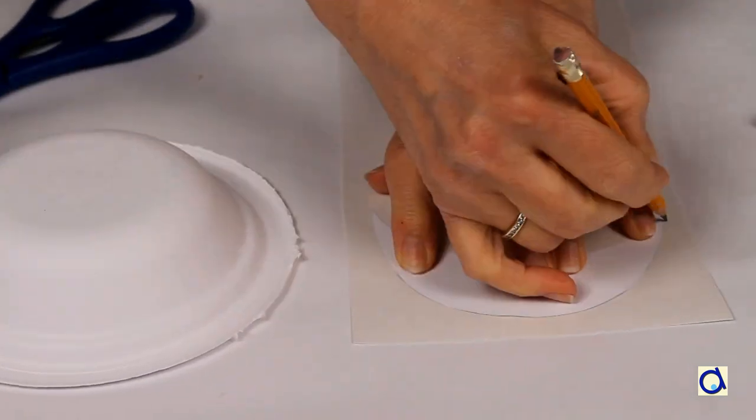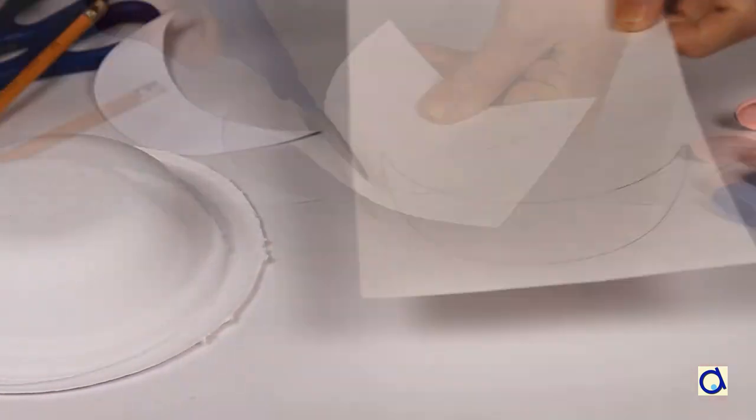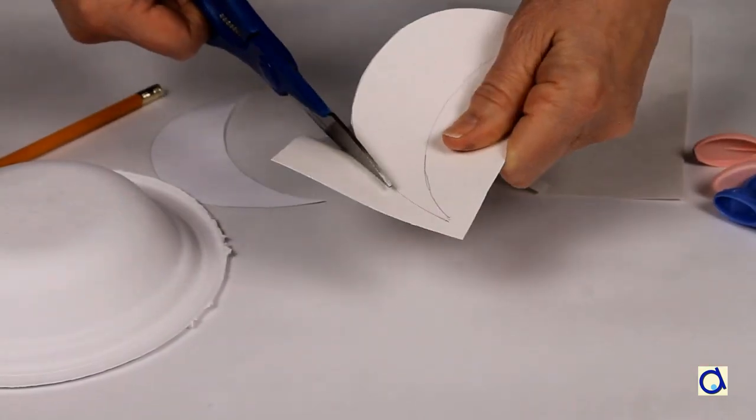Use the pattern that you'll find in the free document and draw the visor on a piece of Bristol paper. Then cut out the visor.